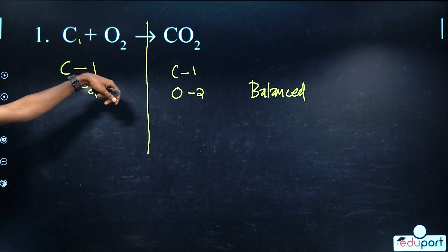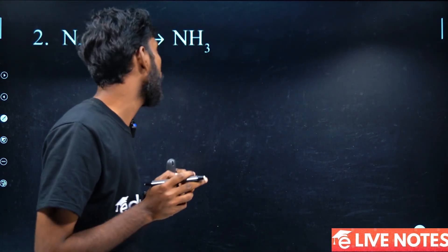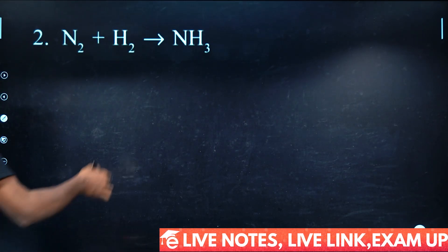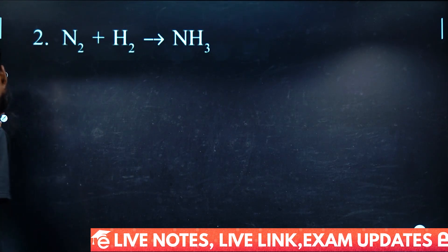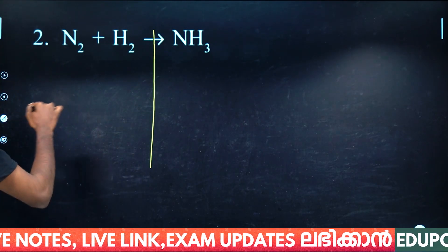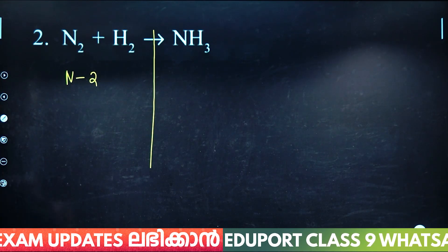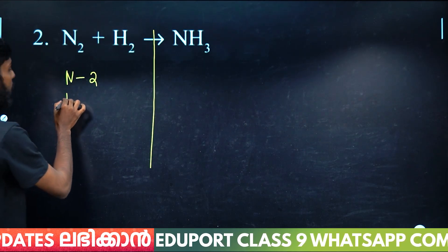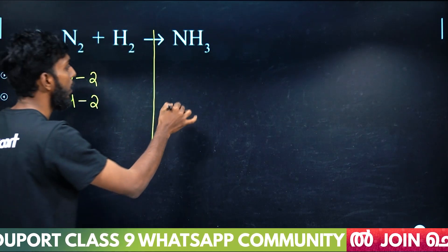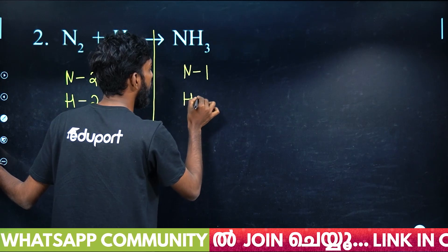We want to use another equation: nitrogen and hydrogen gives NH₃. Nitrogen is 2, hydrogen is 3. On one side nitrogen is 1, hydrogen is 3 — so we need to balance by placing a coefficient of 2 to get 2NH₃.